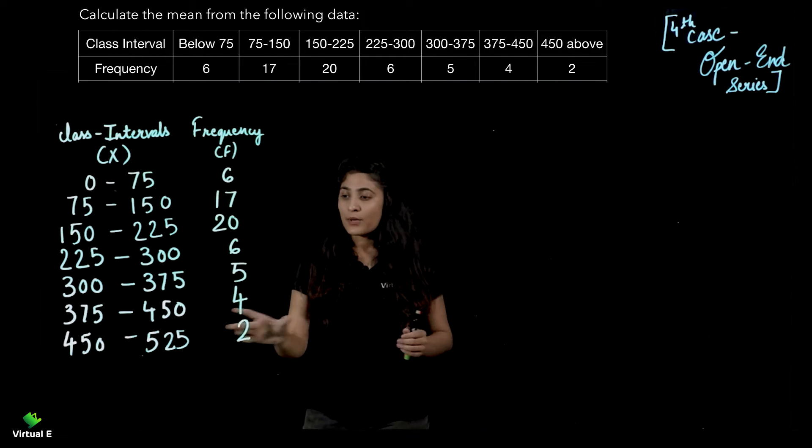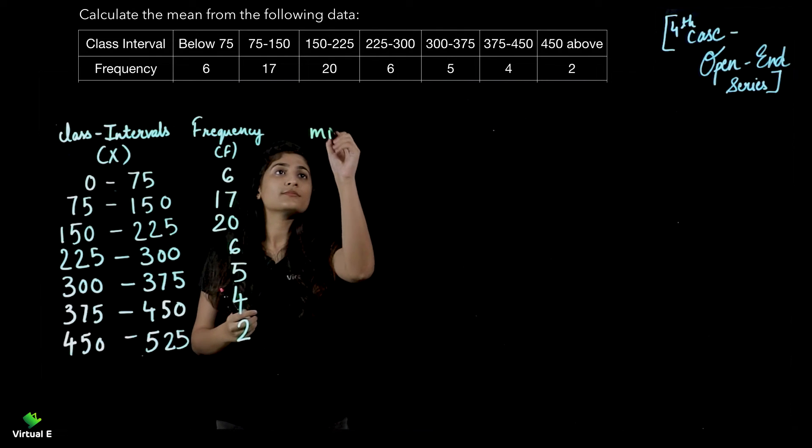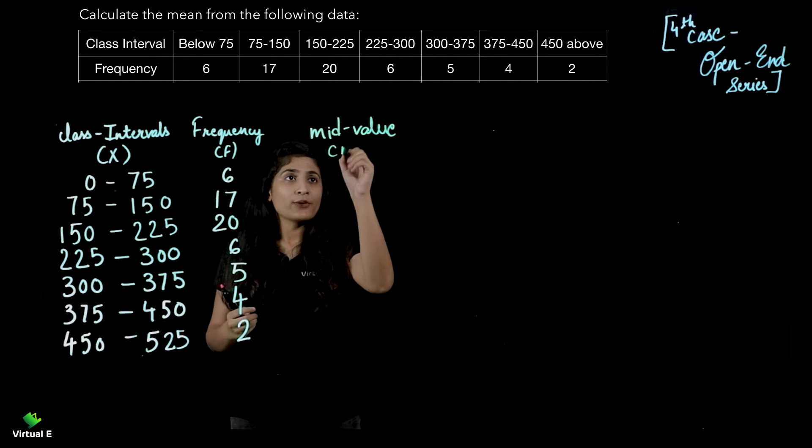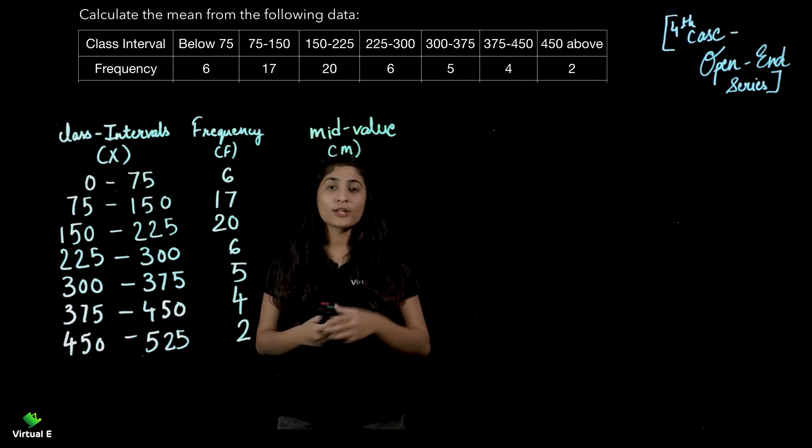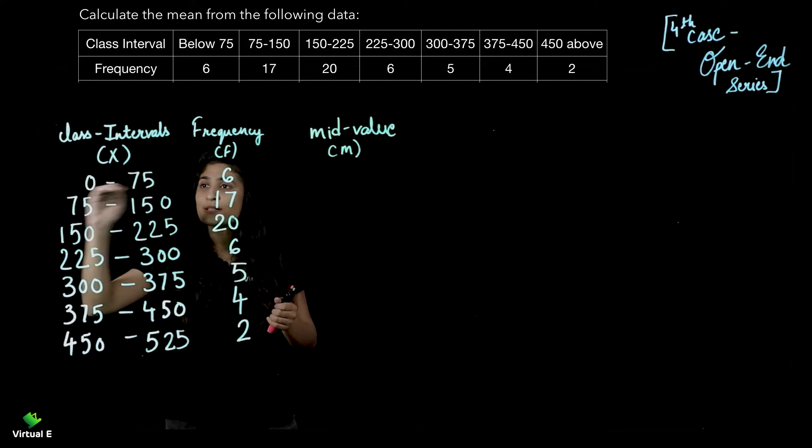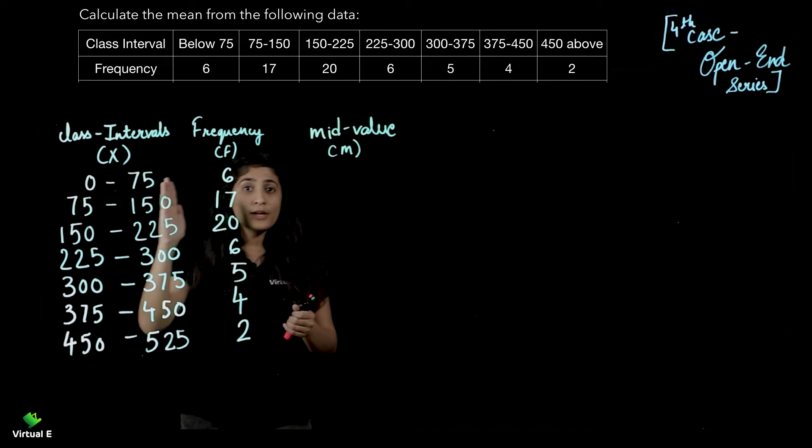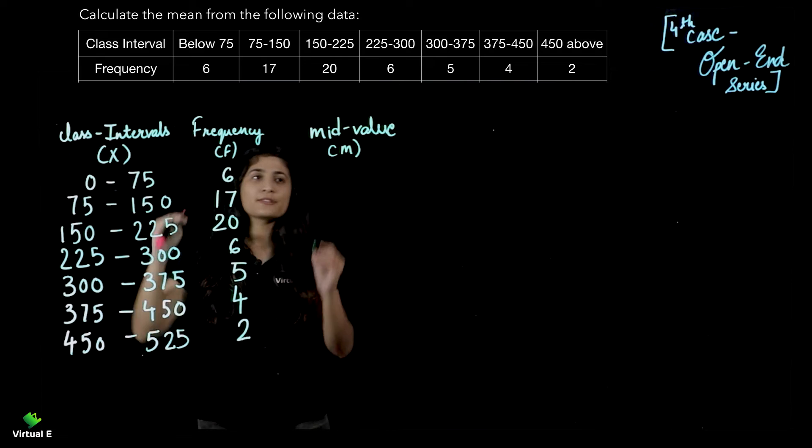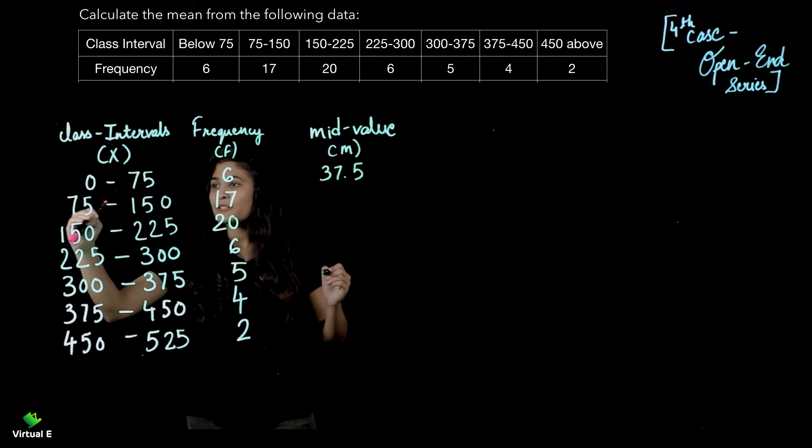Frequency याँ पर दी हुई है. Let's calculate mid value. अब यहाँ पर अगर किसी को mid value calculate करना है तो formula याद रखना. हमेशा classes बहुत छोटी होती है तो हमारे लिए easy होता है. But यहाँ पर if you face any problem, just plus the both limits and divide by 2 जो हमने पहले भी किया था. L1 plus L2 divide by 2. Between 0 to 75, you'll get 37.5.